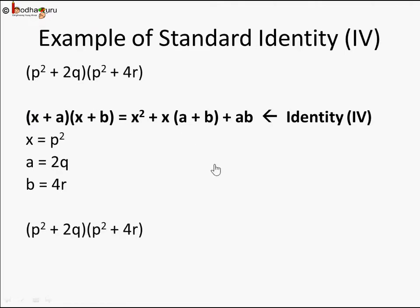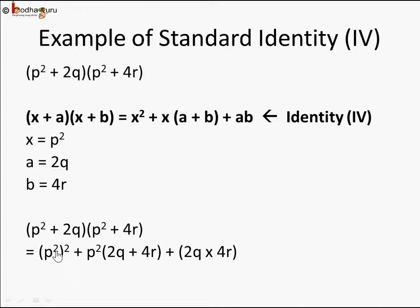So x is p², a is 2q, and b is 4r. We rewrite this using the right-hand side of Identity 4. Remember, x is p², so x² means (p²)² — double square because x itself is p². So we write (p²)² + x(a + b) = p² × (2q + 4r), plus a·b = 2q × 4r. Using the laws of exponents, (p²)² = p^(2×2) = p⁴.